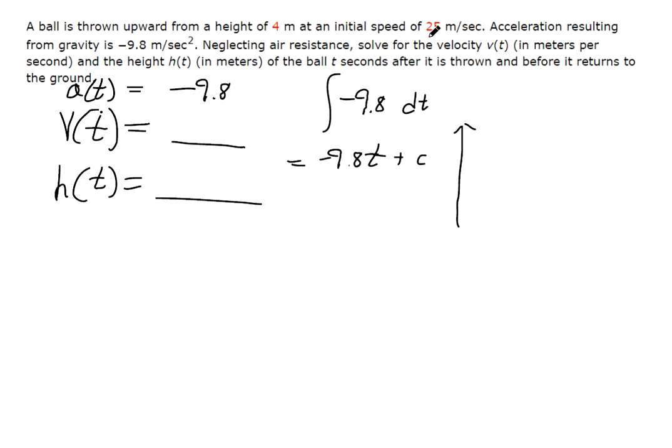The initial speed is 25 meters per second. So when t equals 0, we should have 25 meters. Right now this is our velocity function, but if we plug in 0 for t, we should get out 25 meters per second for velocity.